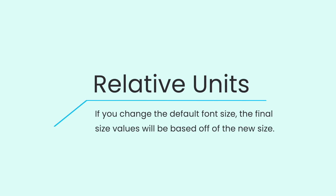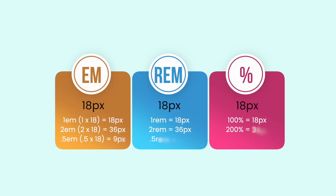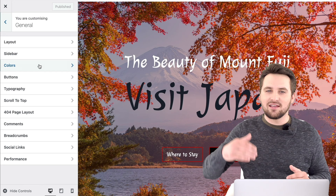Because these are relative units, if you change the default font size, the final size values will be based off of the new size. So if your new font size was 18 pixels, then 1EM is 18 pixels, 2EM is 2 times 18, so 36 pixels, and so on and so forth. The same with REM and with percentages as well. You can change your default font size across your website using your theme if you're using Gutenberg, or in global settings if you're using Elementor.